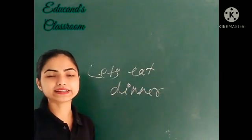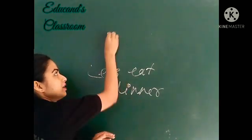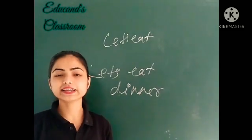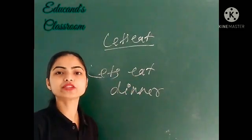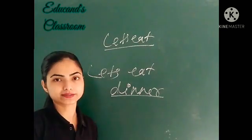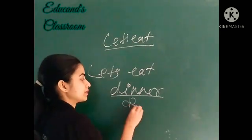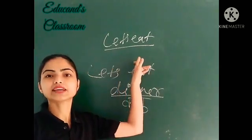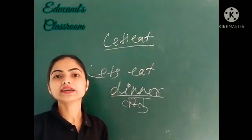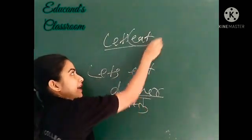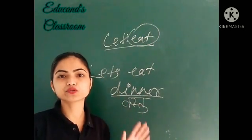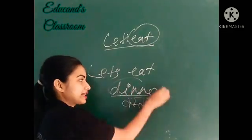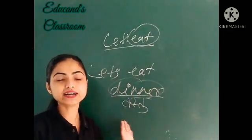Yeh bhi eck complete sentence hai — both the cases, 'Let's eat dinner' or 'Let's eat,' both are meaningful sentences. Lekin yaha peh pahle sentence mein object nahi hai. Second sentence mein there is an object. Object hoota hai jho vastu — jis vastu ki hum baat kar rhe hai. Or subject hoota hai jho vishay hoota hai. Toh pahla sentence hooga intransitive, aur jho verb hai woh hai intransitive verb. Lekin second sentence mein kya ho raha hai — yaha peh eck object hai. Isi liye yeh ho jayega transitive verb.